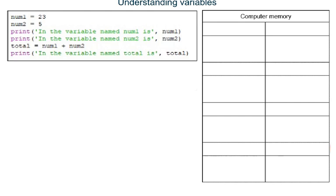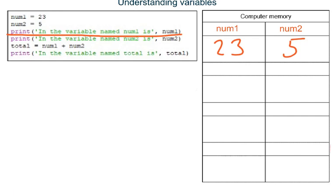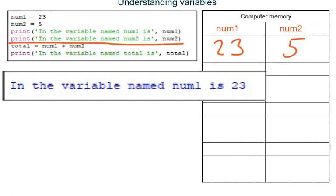Variables can be assigned — in other words they can store — either a string, an integer, a float, or a boolean value. In this program the variables are all assigned integers, whole numbers. Line 1 creates a variable named num1 and assigns the integer 23 to it. Line 2 creates a variable named num2 and assigns the integer 5 to it. Line 3 outputs what has been assigned to variable num1. Line 4 outputs what has been assigned to variable num2.